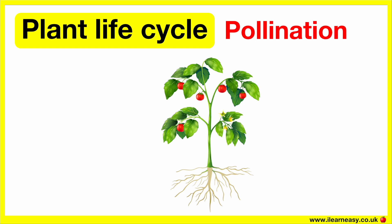Pollination is the process that ensures that the plant will produce fruit and seeds. This occurs when the pollen from one bloom is transferred to another flower of the same species. This can be transferred by the wind, water, or by animals, commonly by insects. Through this process, the anther of one plant is transferred to the stigma of another plant.